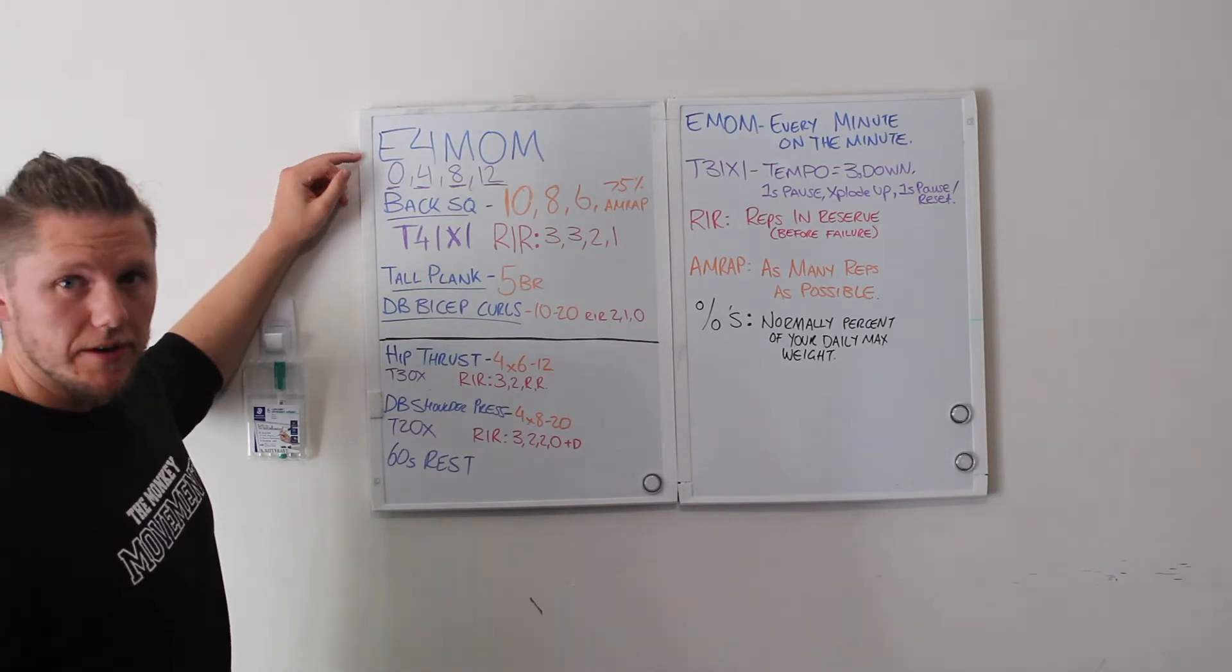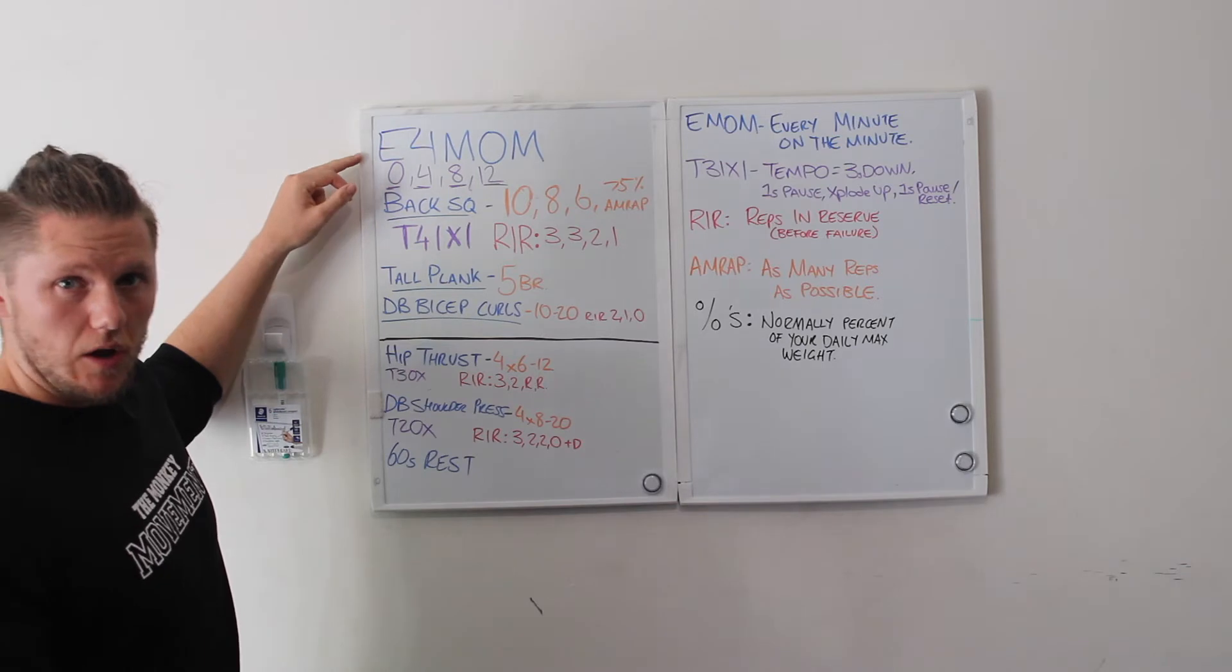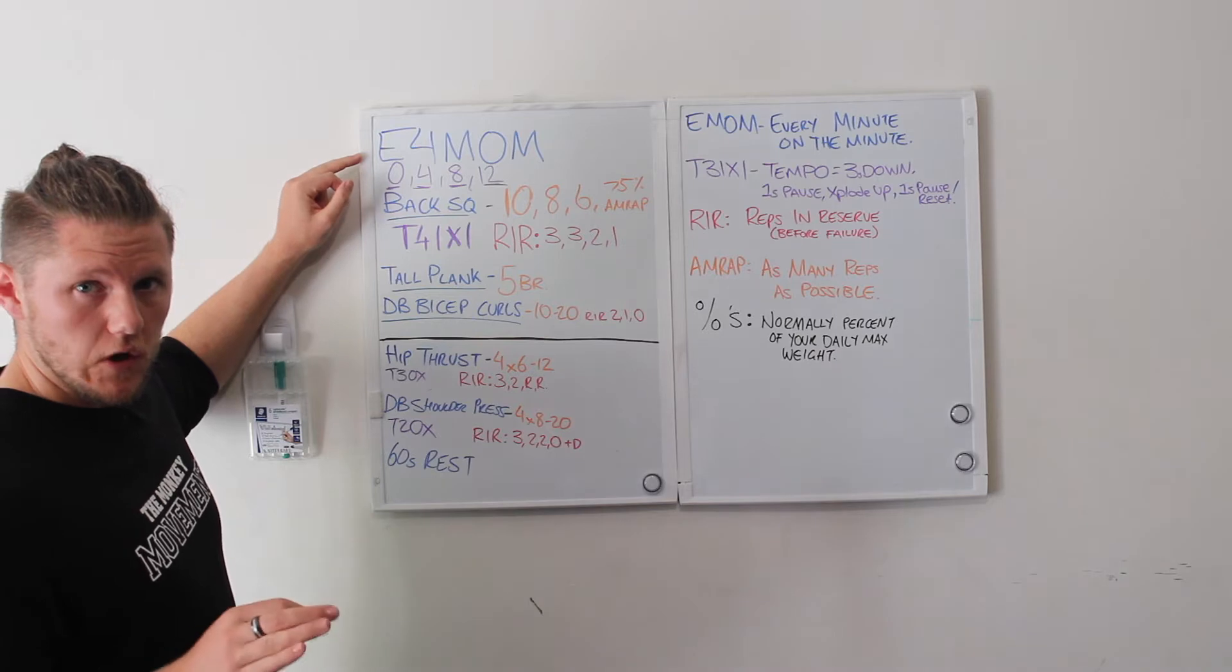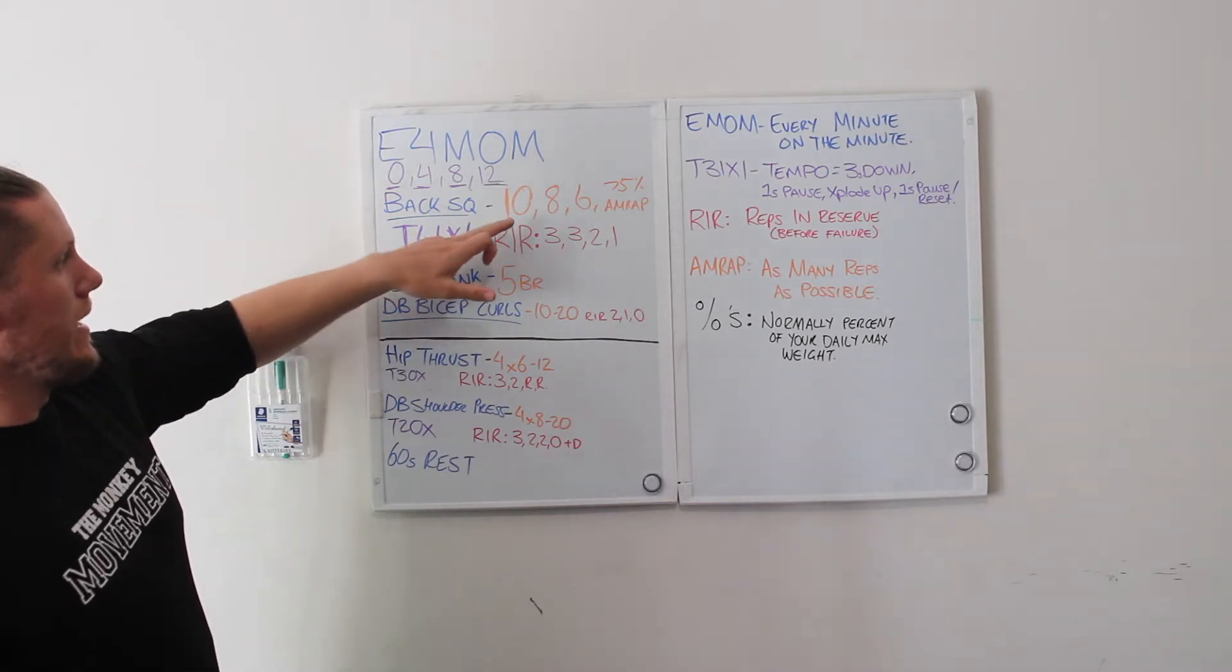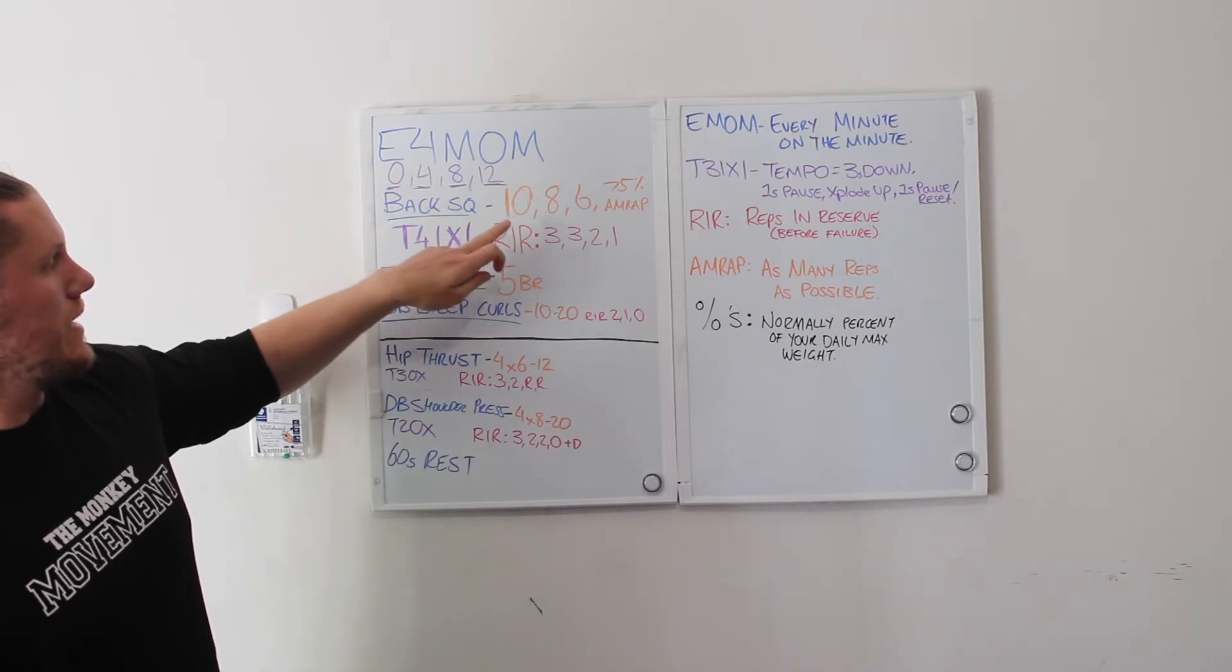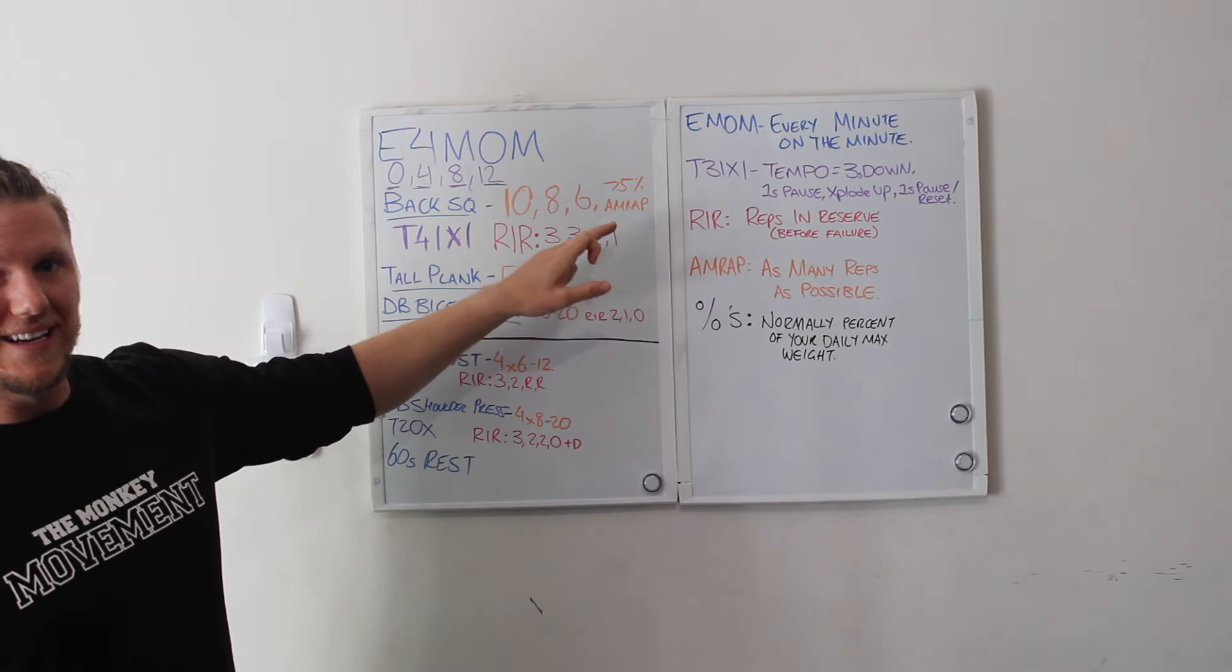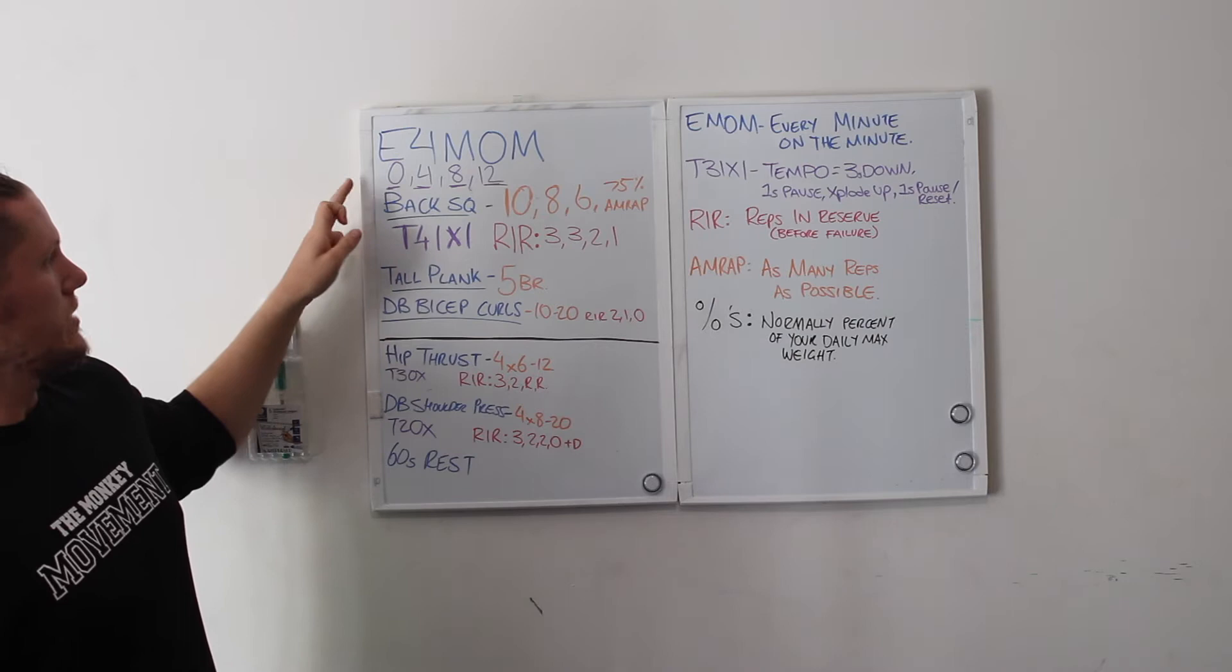To start with, this is pretty common. An E4MOM means every four minutes on the minute. You would start a clock at the first working set, not for your warm-ups. Here we've got a back squat, a set of ten, a set of eight, a set of six, and at 75% as many reps as possible.